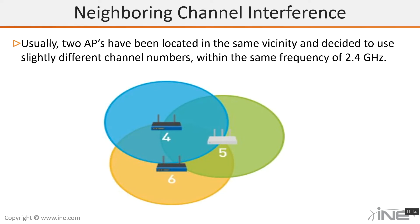The next type is neighboring channel interference. We're still in the same 2.4 GHz frequency, but as you can see in the diagram, you have different channels — 4, 5, and 6, for example — but they're overlapping each other way too much. So instead of helping a roaming person maintain signal, they're actually interfering with each other. Their signals are being burned out, dropping connections left and right. It'll be like a jamming signal — people won't be able to know who to connect to, and they may not even be able to connect at all.